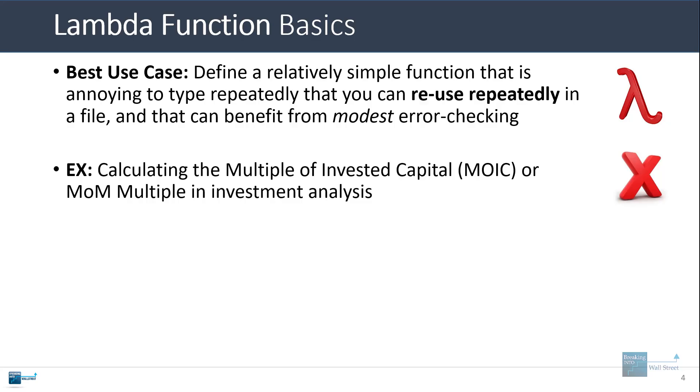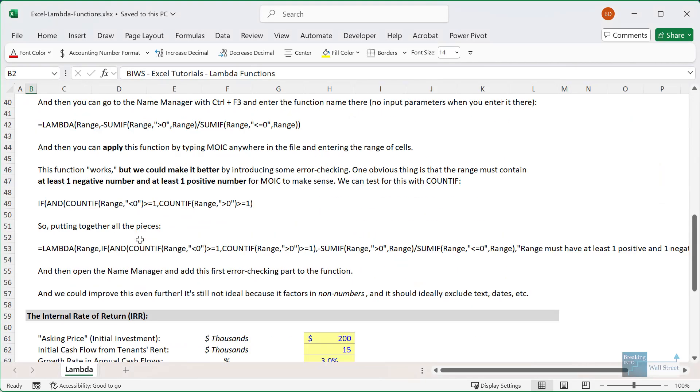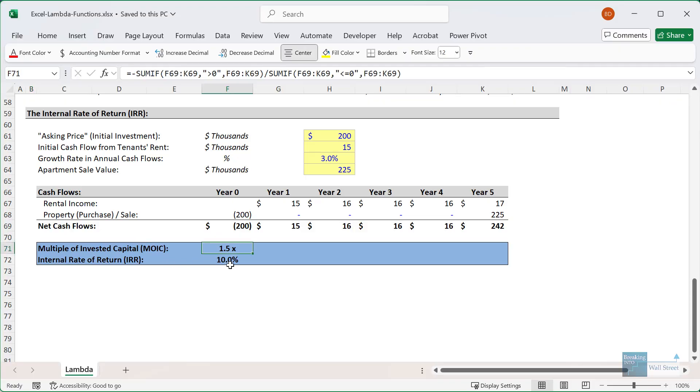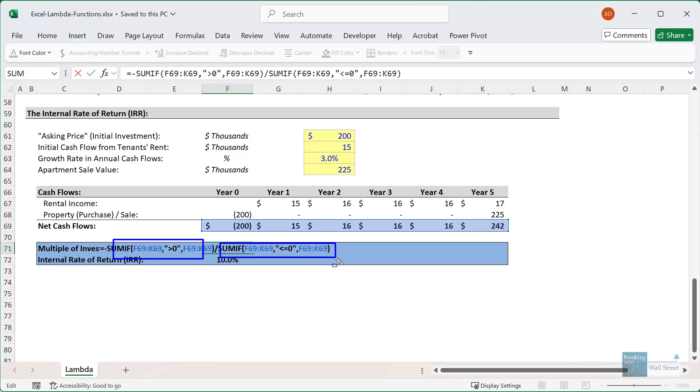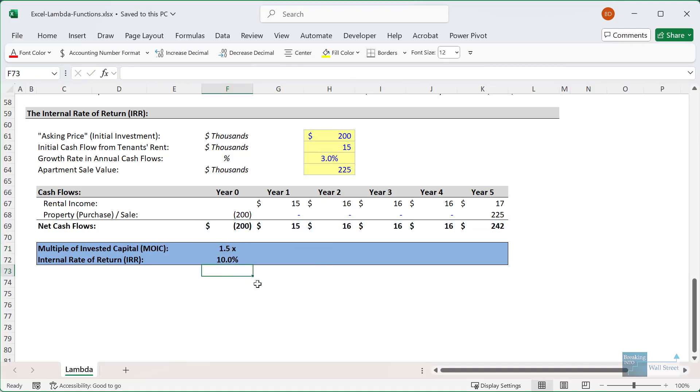Let me pull up our Excel example right here. Traditionally you would calculate the multiple of invested capital with something like a SUMIF function. You'd sum up all the positive numbers and then you would divide by all the negative numbers. But with a Lambda Function, you can type in something like equals MOIC and apply it to this range of cells and that will calculate this for you as well. You can just type that in as your own custom function in Excel.